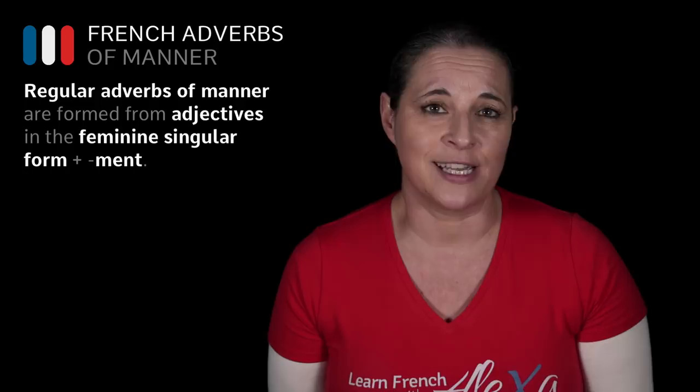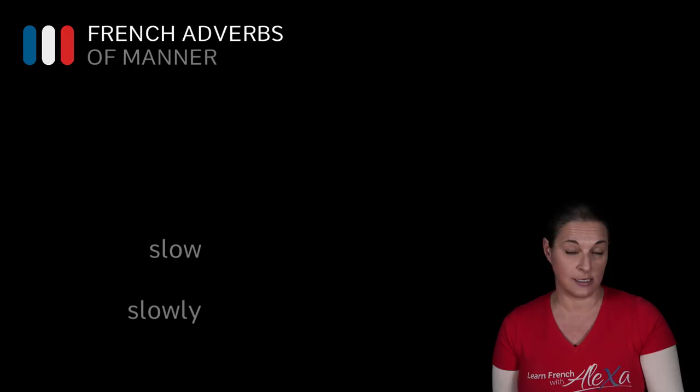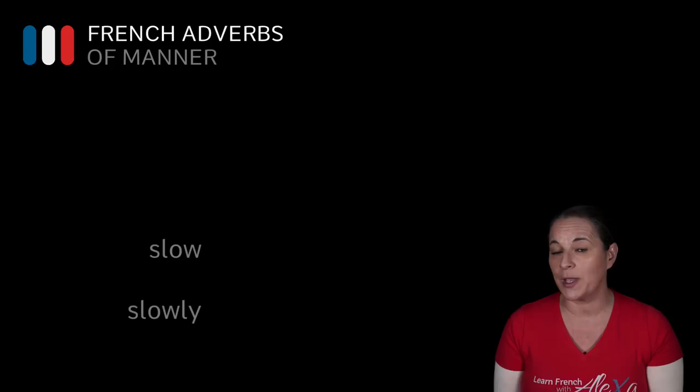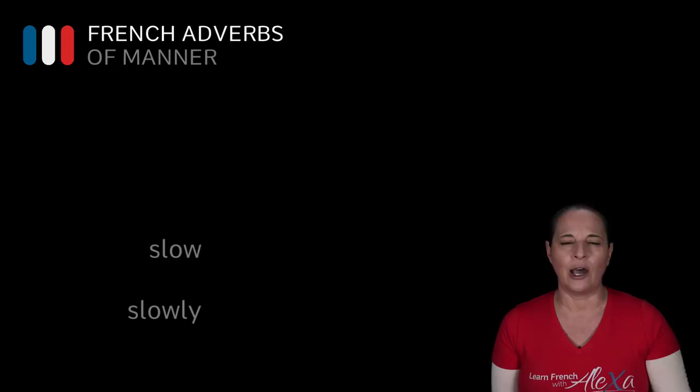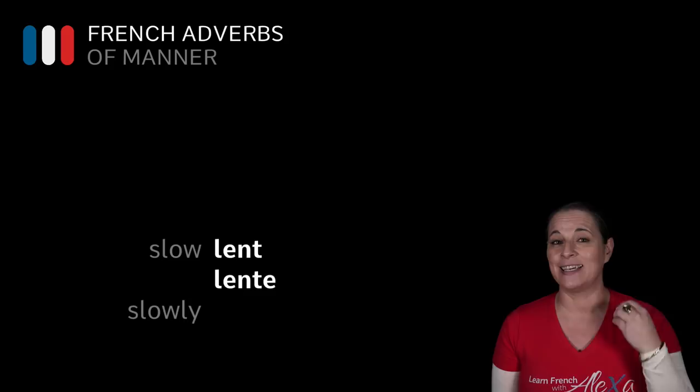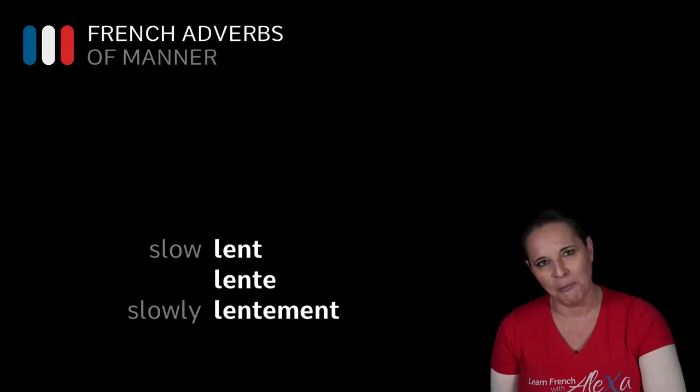For example, we want to say slowly. That's an adverb of manner — how does he walk? He walks slowly. In English, we have added -ly to form this adverb. Well, in French, we add -ment to the feminine adjective of that word. So, how do you say slow? It is lent. What is the feminine of lent? It is lente — you add an e. And then, in order to make it an adverb, you add -ment to that. So, lentement. Can you see that? Lent → lentement.